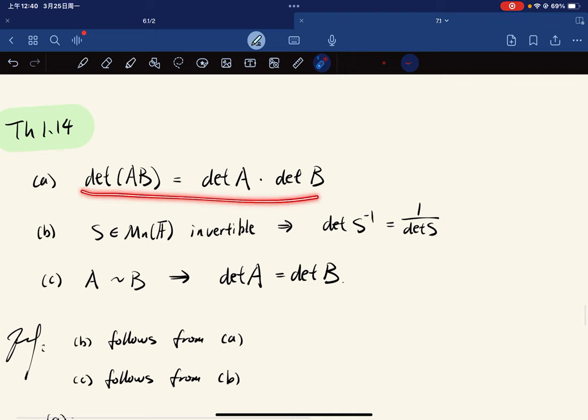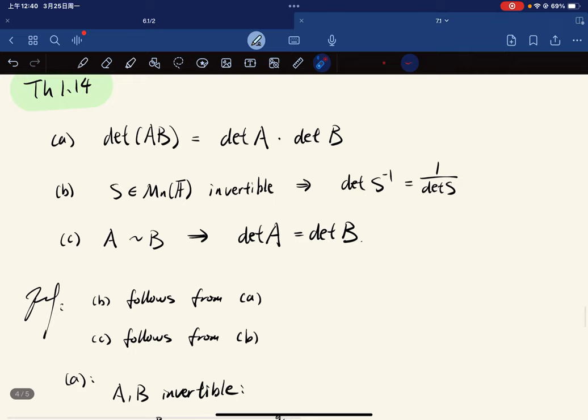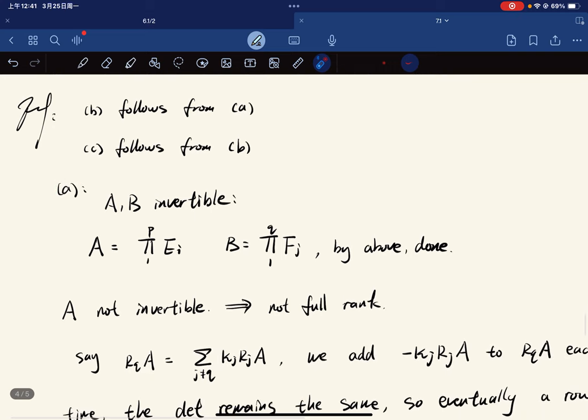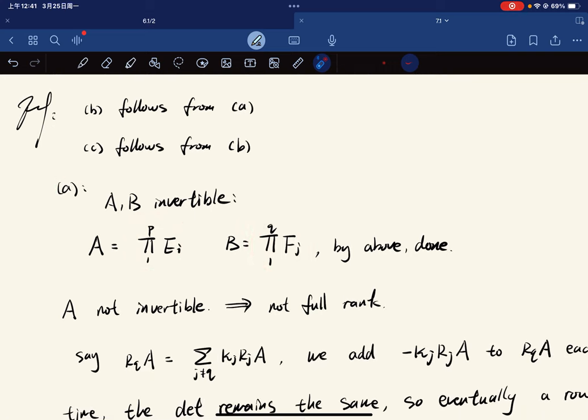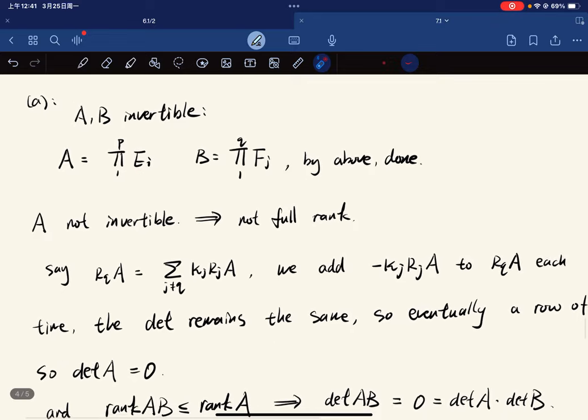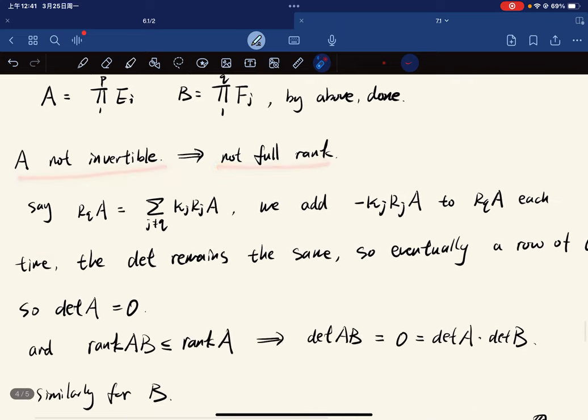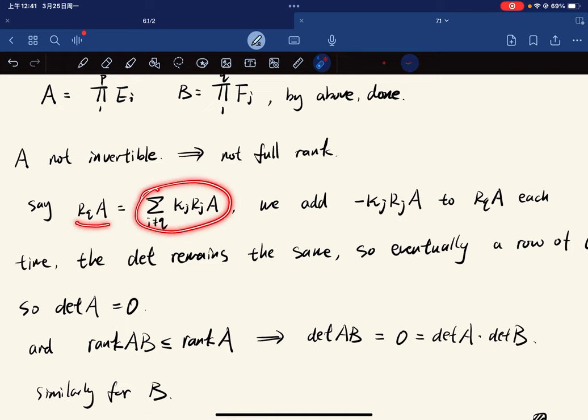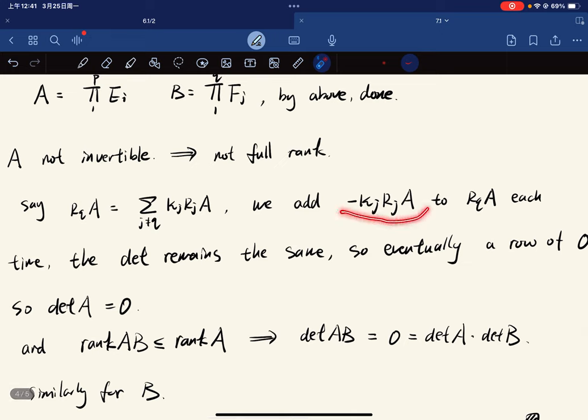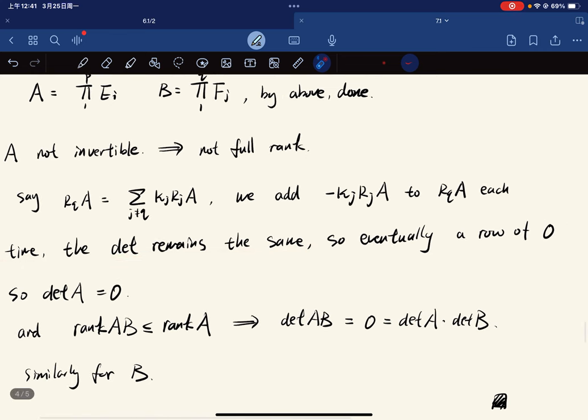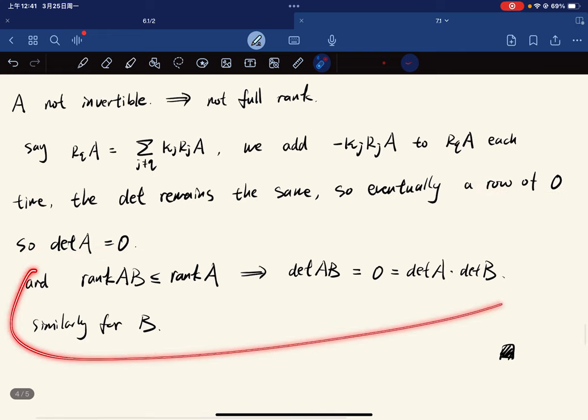Now, general ab is equal to this. So here's another theorem. We have these three. And so we notice that b follows from a and c follows from b. So we just prove a. If a is invertible, then a and b are product of elementary matrices. If a, so we're done. If a is not in row, it's not in full rank. So one of the rows is the linear combination of other rows. If we're deleting the summand, each time the determinant remains the same. So eventually a row of zero. So the determinant of a should be zero. So we're good.